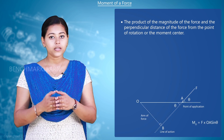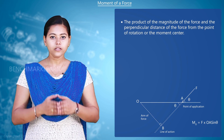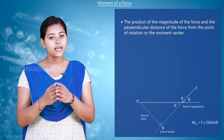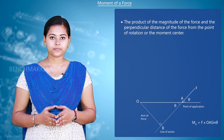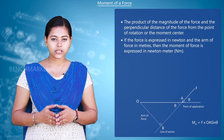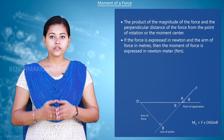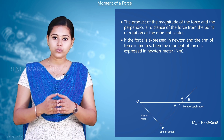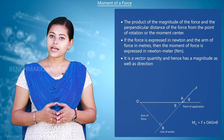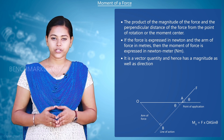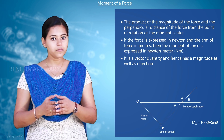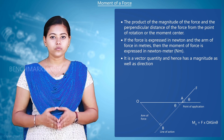The line perpendicular to the plane containing the force and passing through the moment center is called the axis of the moment. If the force is expressed in newtons and the arm of force in meters, then the moment of force is expressed in newton-meters. It is a vector quantity and hence has a magnitude